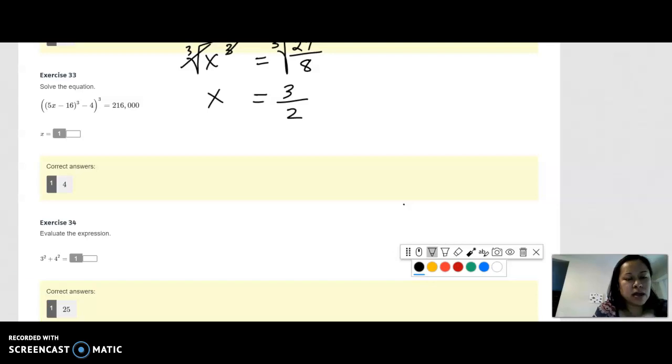Root both sides of the equation. Cube root, remember, undoes the cubing. So cube root, okay, that's going to get rid of this and this. Then you're left with 5x minus 16 cubed minus 4 equals, go ahead and use your calculator.